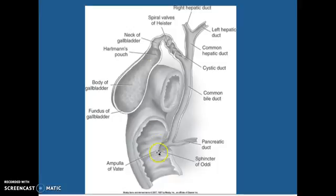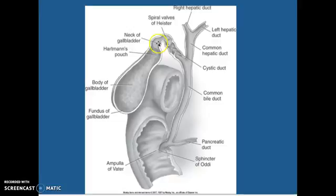Here's a better picture. The ampulla of Vater is your sphincter of Oddi going off to your pancreatic duct, or you can go up into your common bile duct, into your cystic duct. It has these little spiral valves of Heister. Then you have your neck of your gallbladder — that's where all the gallstones get stuck — and in Hartmann's pouch also. Here's the body and here's the fundus; the fundus is the bottom. If you were to go up the bifurcation, you have your common hepatic duct with your right hepatic duct and your left hepatic duct.